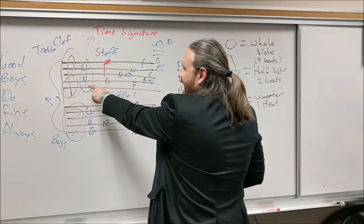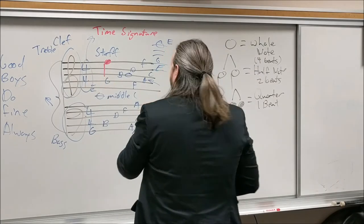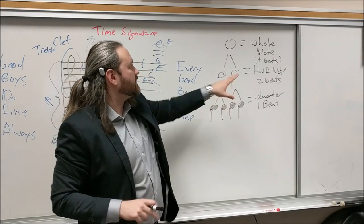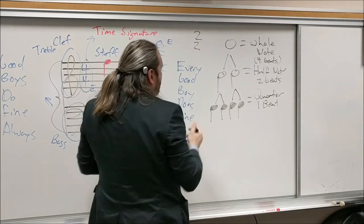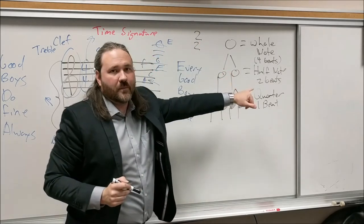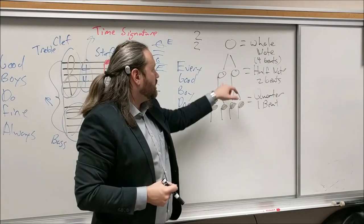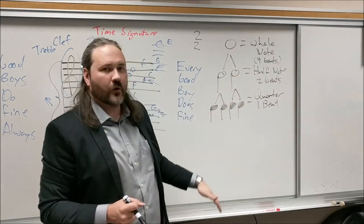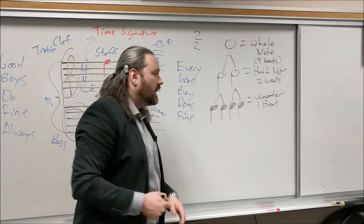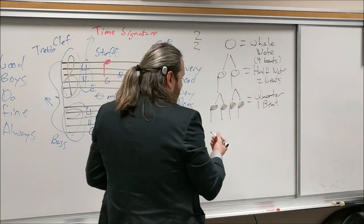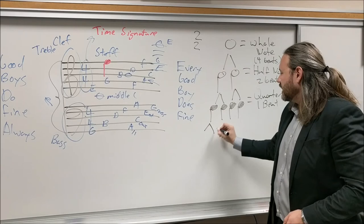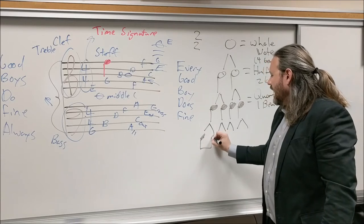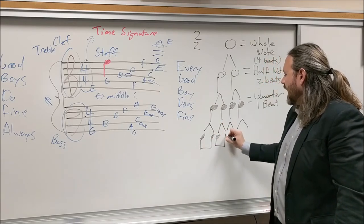One thing about time signatures is you can change the numbers to indicate which note value gets the beat. For example, 2/2 time — called cut time — indicates the half note gets the beat, so the quarter note is half a beat and a whole note is two beats. There are also time signatures that use the eighth note. An eighth note is made by continuing to divide — you can do this infinitely.